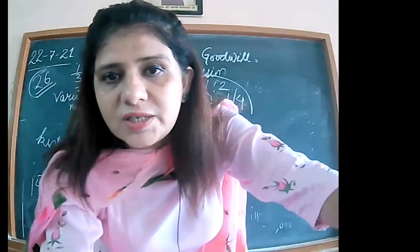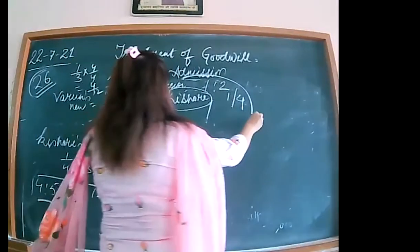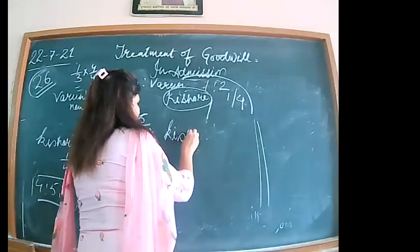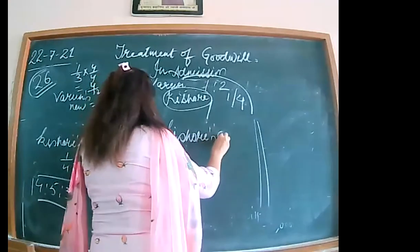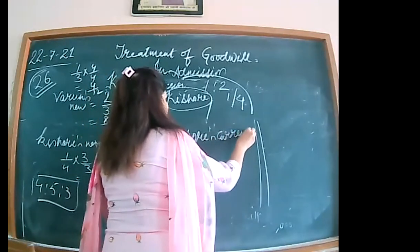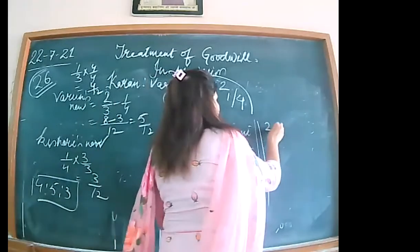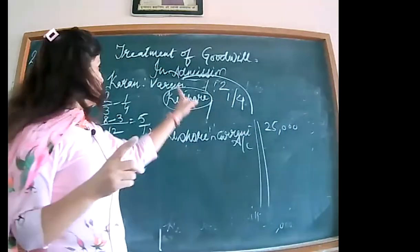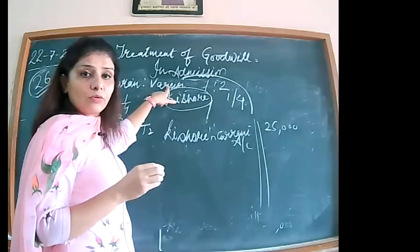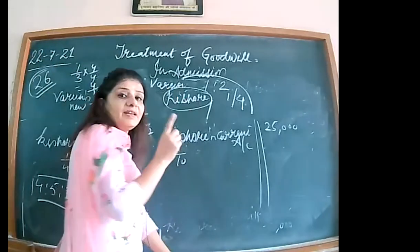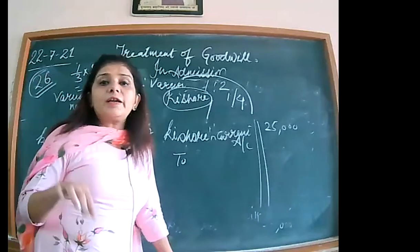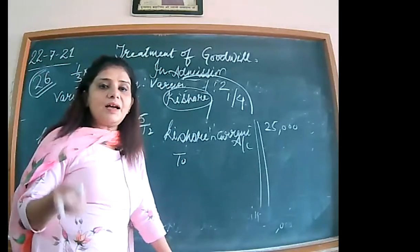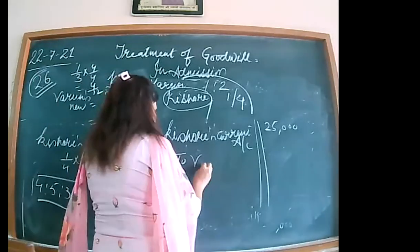Kishore's capital is fixed, so we open Kishore's current account. The journal entry: Kishore's current account debited with 25,000 — his share of goodwill — to Varun's current account, because only Varun is sacrificing and Varun's capital is fixed. Since Varun's capital is fixed, the credit goes to Varun's current account. Premium for goodwill account is not opened here.